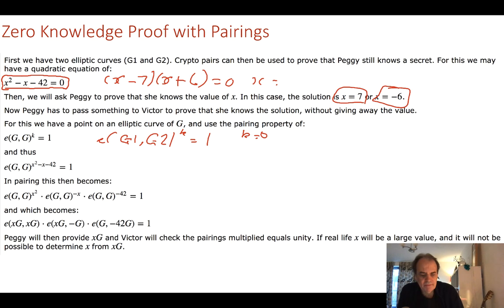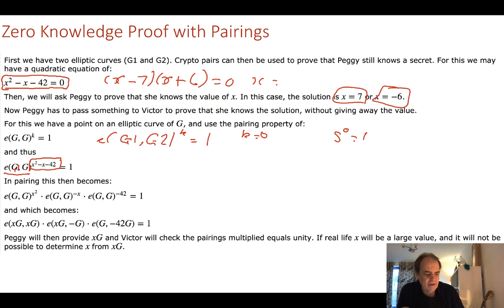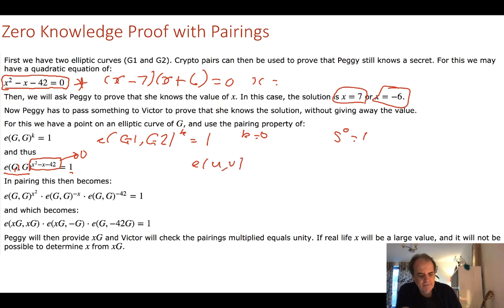Whenever we take our pairing function and raise it to the power of zero we get one — just like five to the power of zero equals one. So we take our pairing function with those special properties, and we raise our pairing function to x²-x-42, which must equal one. Obviously this needs to become zero for Peggy to be able to prove she can answer. Because of pairing, e(u,v)^(a+b+c) equals e(u,v)^a · e(u,v)^b · e(u,v)^c, and so on.